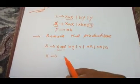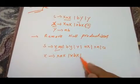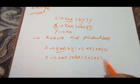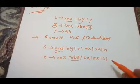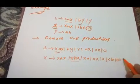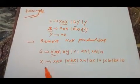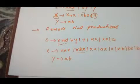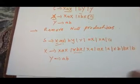Again we need to replace wherever there is an X with the null value. So this will be XaAX as done earlier, and then there is XbX — so again we replace X with null, giving XbX, XbX, and db as done earlier. The last rule doesn't contain any X so we don't need to replace anything there. This was the first step — remove all null productions — done correctly. Now moving towards the next step.